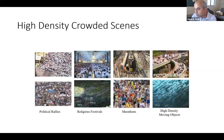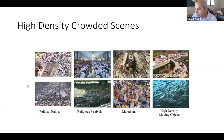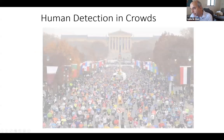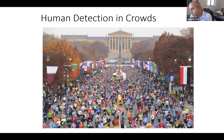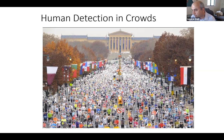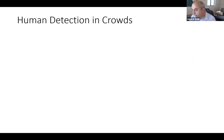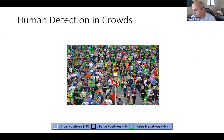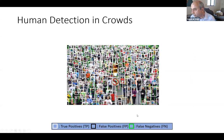Another thing we can do is analyze crowds at political rallies, religious festivals, or marathons. We want to detect every person in a dense crowd by putting a bounding box on each one — a very challenging task. We have false negatives shown in green — people the algorithm missed — and false positives shown in black — where we detected a person that wasn't there. We can do pretty well but still have some false negatives.